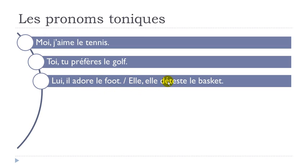ELLE, elle déteste le basket. 'Détester' means 'to hate'. We're talking about basketball — le basket. ELLE, elle déteste le basket. Even if you see ELLE twice, remember that you want to insist, so you put the pronom tonique first. It may look the same as the pronom personnel here, but you've still got two different pronouns: pronom tonique, then pronom personnel.